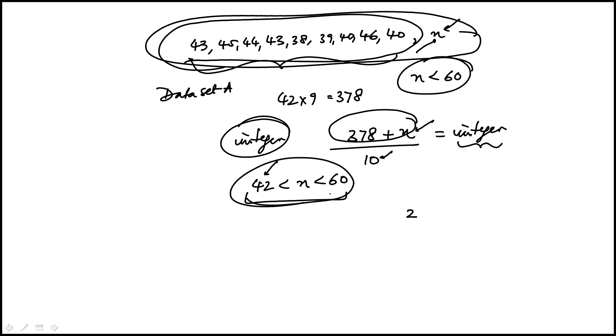Looking at this range, the only number with a units digit of 2 is 52. So n equals 52, and you'll see that 378 plus 52 equals 430, and the average would be 43. The answer is 52.